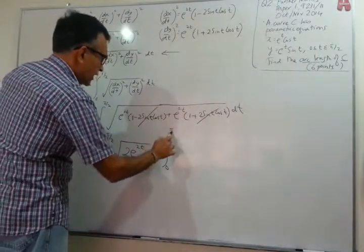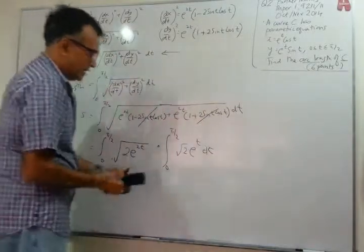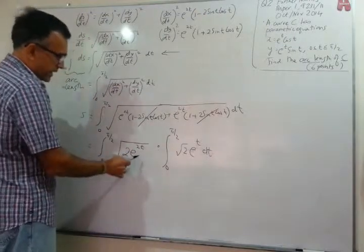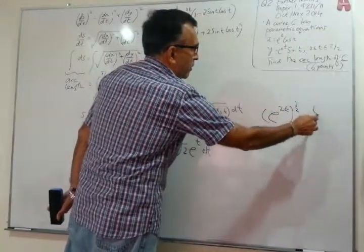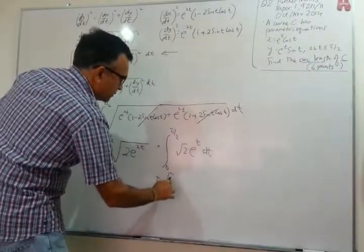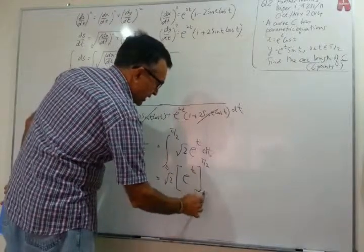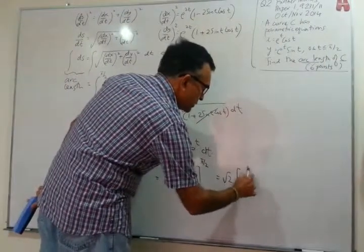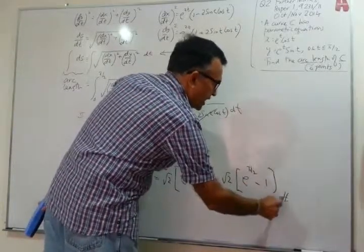So the arc length equals ∫ from 0 to π/2 of √2 · e^t dt. Taking √2 outside, we integrate e^t to get e^t, evaluated from 0 to π/2. Plugging in π/2 gives e^(π/2), and plugging in 0 gives e^0 = 1. So the final answer is √2 · (e^(π/2) − 1), and we are done.